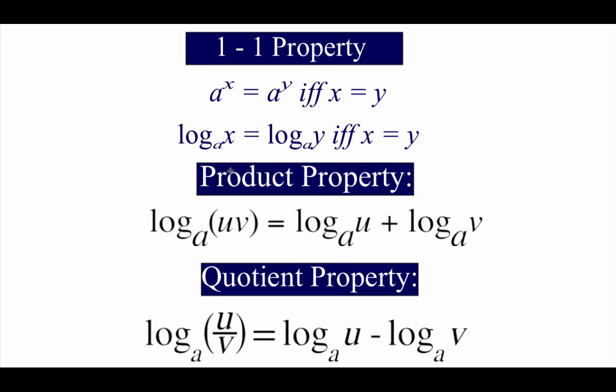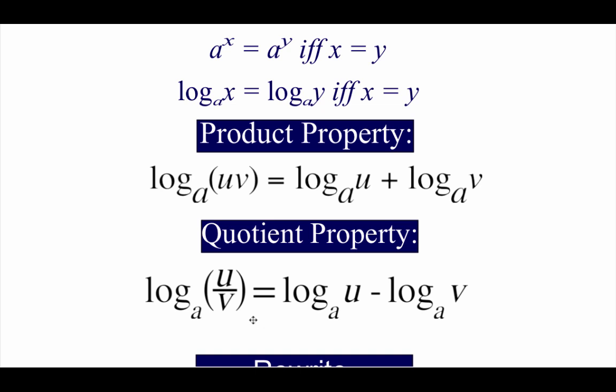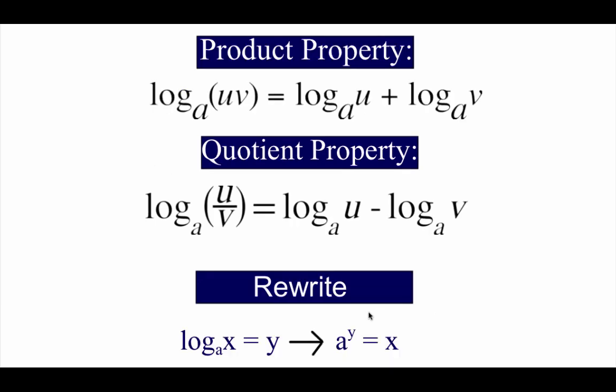We've also got a product property which lets us split multiplication with logarithms into two separate logarithms with addition between them. We've got a quotient property that lets us turn a division logarithm problem into a subtraction problem, and then remember we can always rewrite logarithms as exponentials or vice versa — we could also go exponential form to logarithmic form.